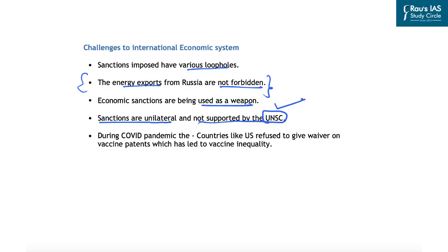The fact that unilateral sanctions are being imposed without UNSC endorsement shows that the global order created after the Second World War is witnessing challenges clearly visible in the Ukrainian crisis. Even during the COVID-19 pandemic, the world could not reach consensus on providing a waiver on vaccine patents under the WTO regime. This has led to vaccine inequality, where some developed countries give booster doses to their citizens while underdeveloped African countries have not received even a single dose at times.